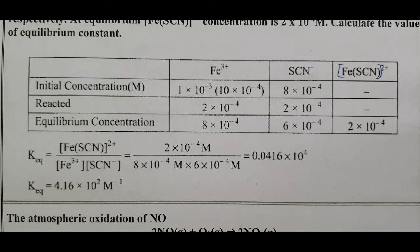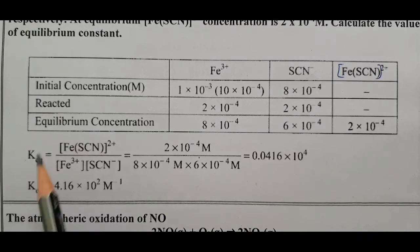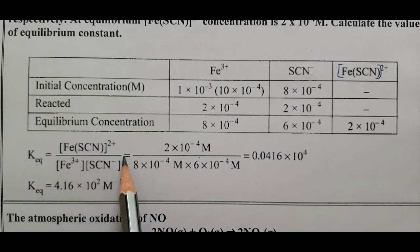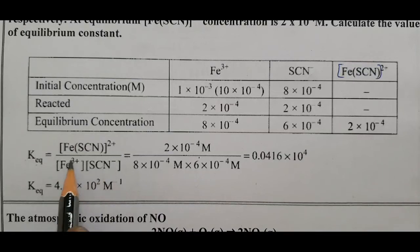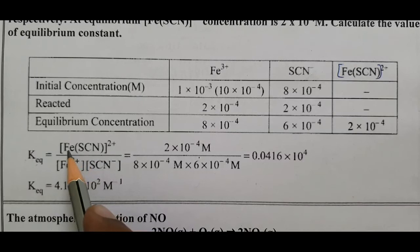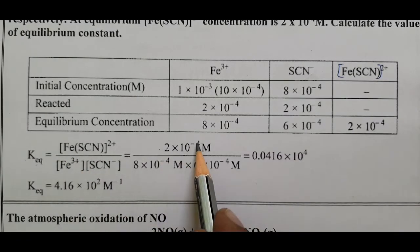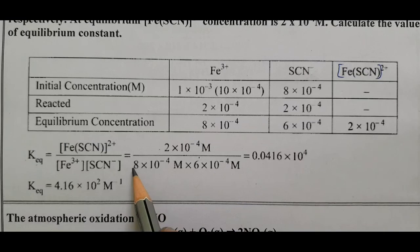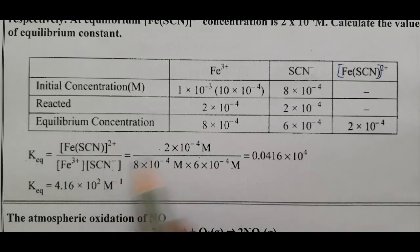The equation: Kc equals product concentration divided by reactant concentrations — [FeSCN²⁺] divided by [Fe³⁺][SCN⁻]. Product concentration is 2×10⁻⁴; reactant concentrations are 8×10⁻⁴ and 6×10⁻⁴.